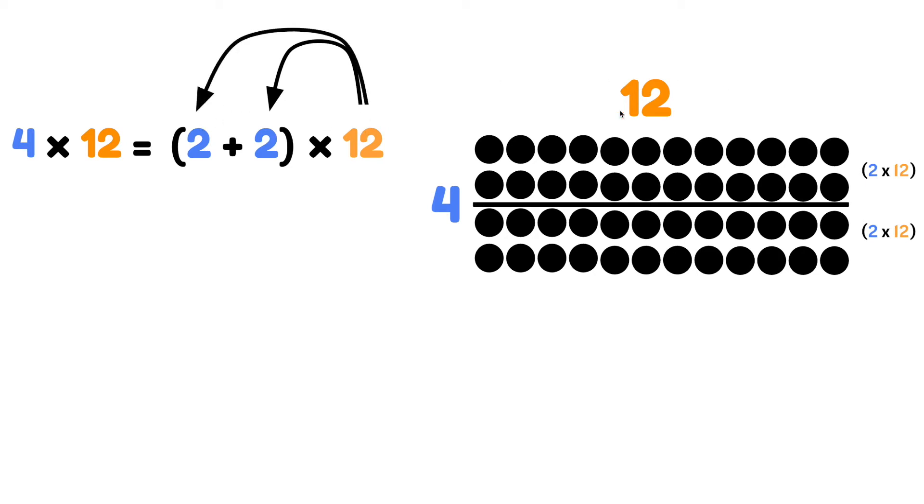We're simply sharing this 12 with these 2 rows on top and distributing this 12 to these 2 rows below. So we have 2 rows of 12 on top plus 2 rows of 12 below.